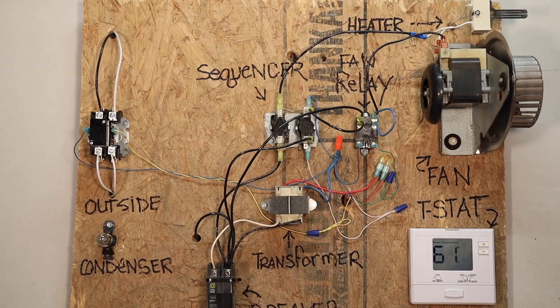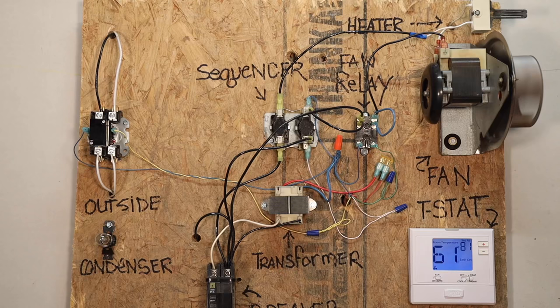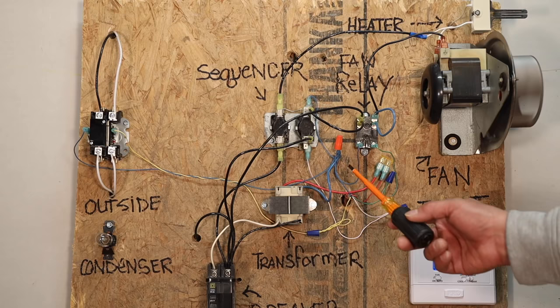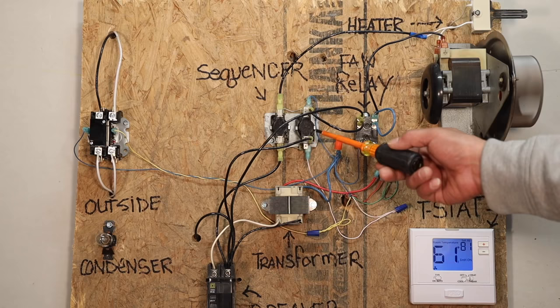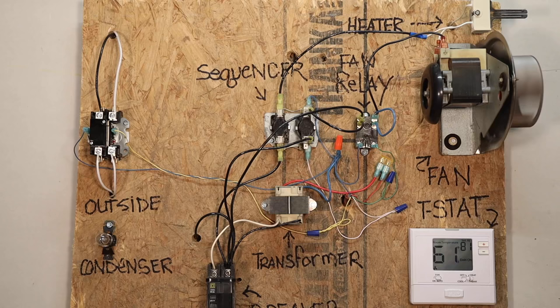So now let's put our thermostat over to heat. And like I was explaining before, the 24 volts is not going to the fan relay, but it's going to the sequencer, and your power is being passed through because it has made a circuit. It's going through the center part and it turned on your blower motor.